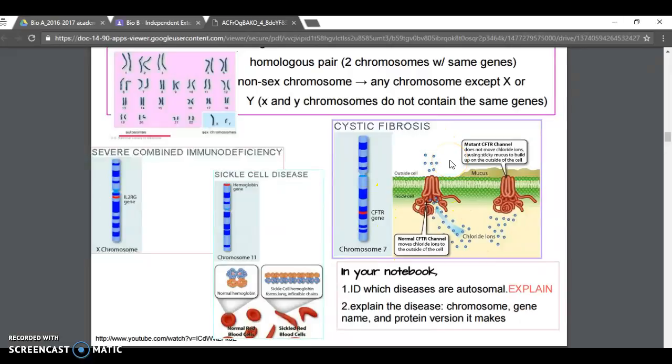For this one you'd say, this is on chromosome 7. Based on the definition, you have to decide is it autosomal or not. Then you have to give the name of the gene. In your scrap paper you'd say, well, cystic fibrosis is autosomal or not, the name of the gene, and then you need to talk about the protein that the gene produces specific to the disease.